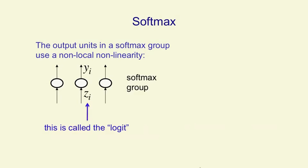And then they give an output yi that doesn't just depend on their own zi. It depends on the z's accumulated by their rivals as well. So we say that the output of the ith neuron is e to the zi divided by the sum over that same quantity for all the different neurons in the softmax group.